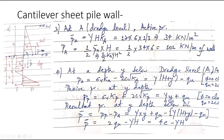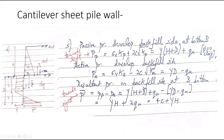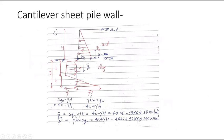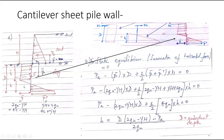Now we can draw the earth pressure distribution diagram. Just below the dredge level the distribution shows a rectangular area and a triangular area; the difference of the two gives the final earth pressure distribution diagram. We have already calculated P_bar and P_bar_dash. Note that 2Qu − γH will be smaller while γH + 2Qu will be larger in magnitude.